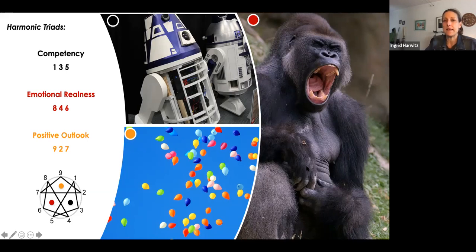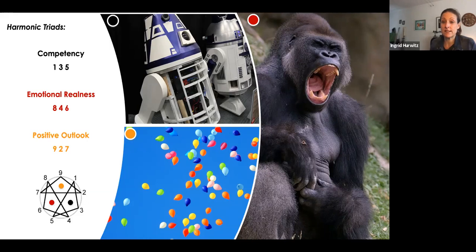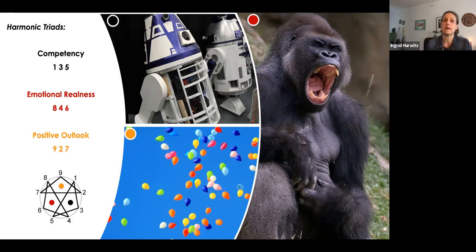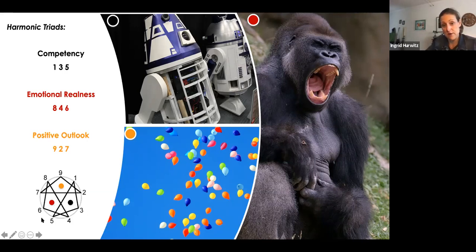The Emotional Realness triad is types 8, 6, and 4, represented by a gorilla making a strong demonstration of its feelings. It used to be called the Emotional Reactivity or Reactive triad, but Russ renamed it twice to be more egalitarian and not stigmatize one triad over another. Then you've got the Positive Outlook triad - types 9, 2, and 7 - represented by happy balloons flying into the sky.